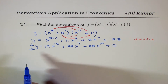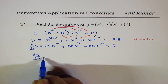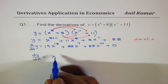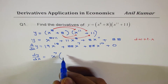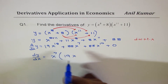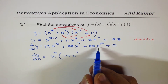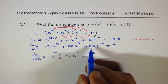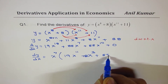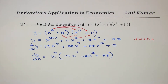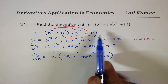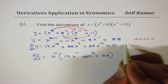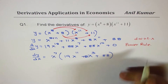So that becomes our answer. We can write dy/dx — taking x^7 as common — we get 19x^11 plus 88 times x^3, so the derivative is x^7 times (19x^11 + 88). We have not applied the product rule here; we expanded it and then applied the power rule.